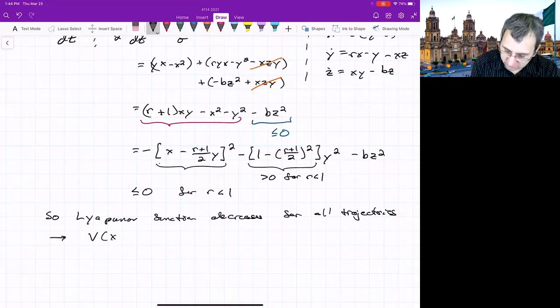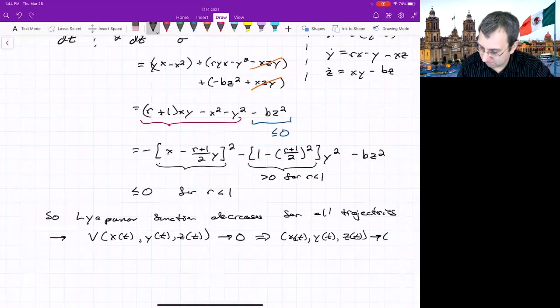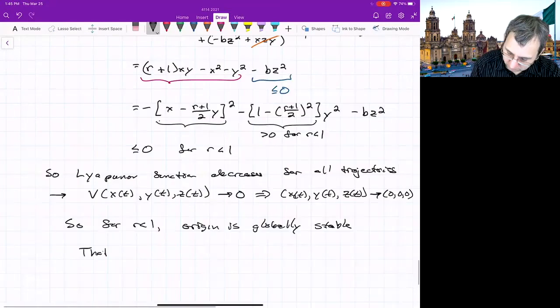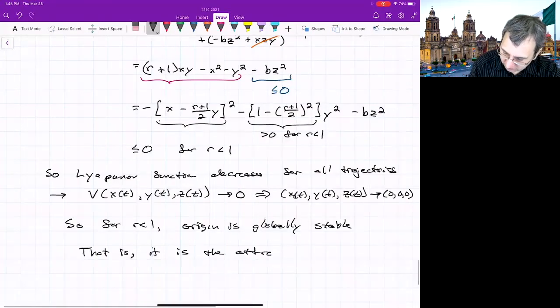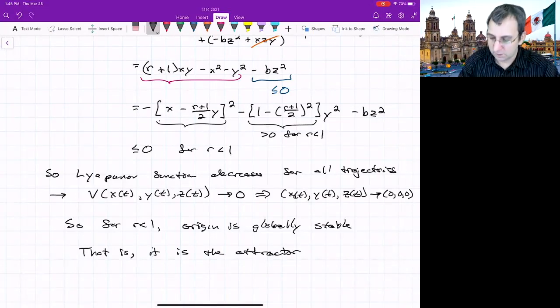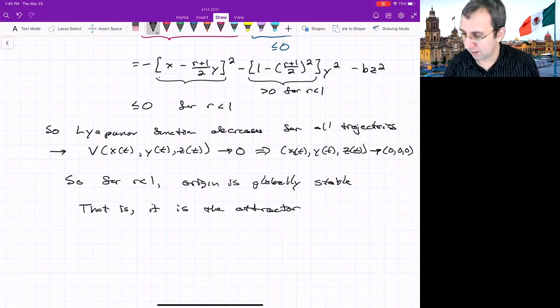So the Lyapunov function decreases for all trajectories, meaning they approach the origin. So v(x,y,z) is a function of time, goes to 0, which means that x, y, and z goes to the origin. So for r less than 1, the origin is globally stable. That is, it is the attractor. It's not strange. It's rather boring. Everything just sort of goes down to nothing. It is the attractor. So we know at least what isn't happening for r less than 1. We don't get that interesting behavior of the Lorenz system. But next time, we'll look at other cases.